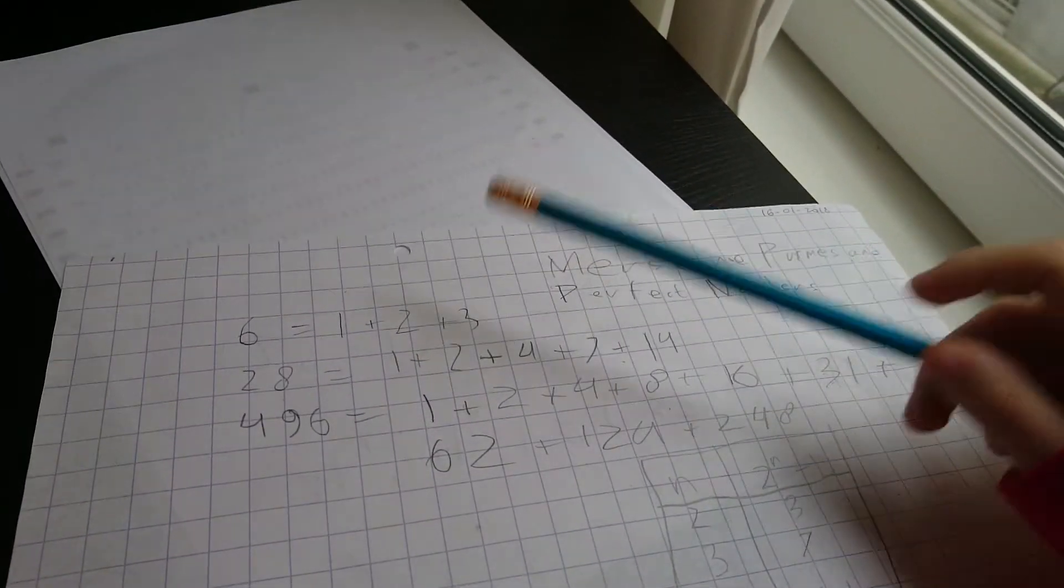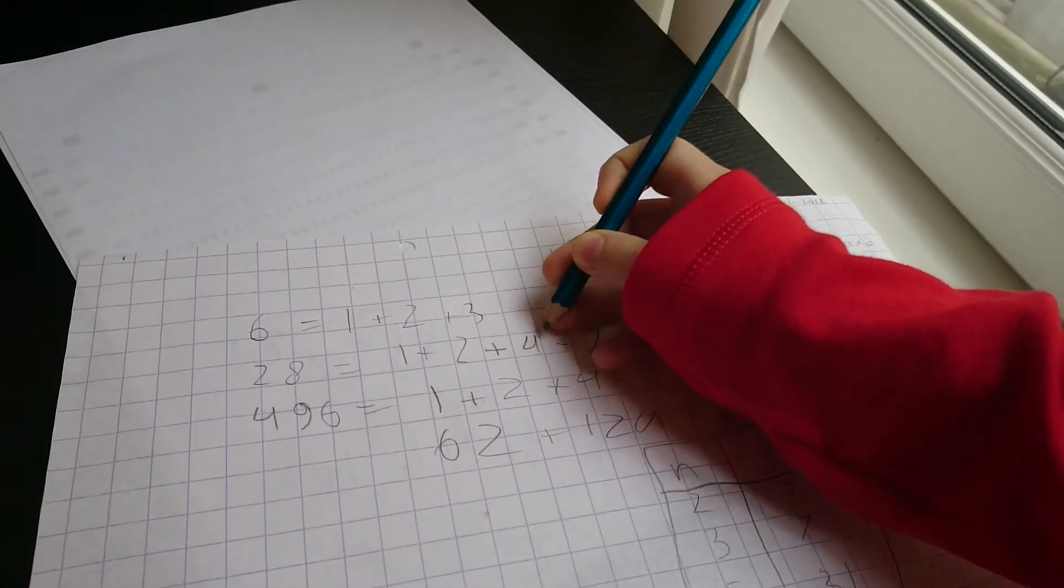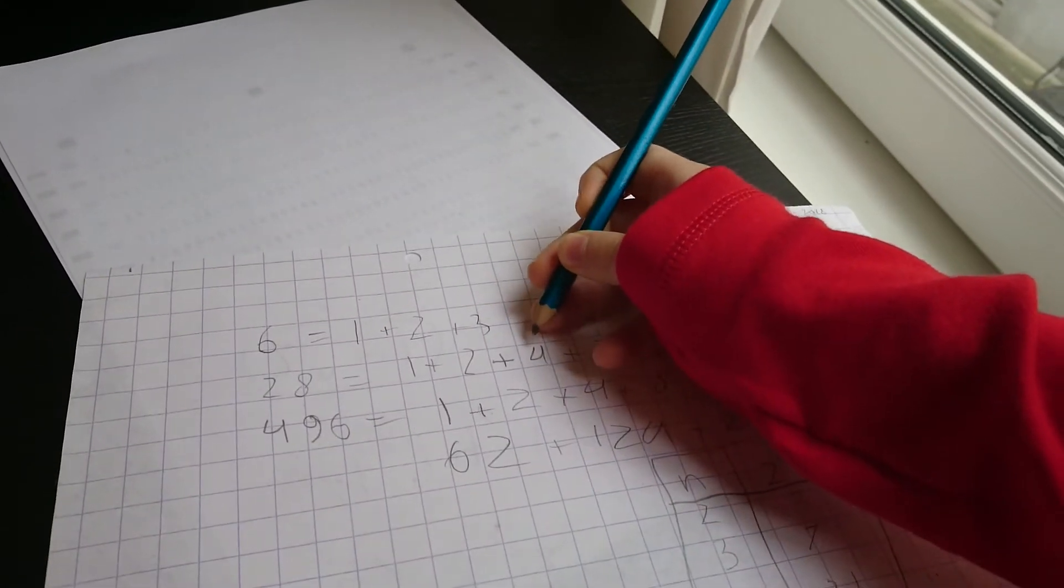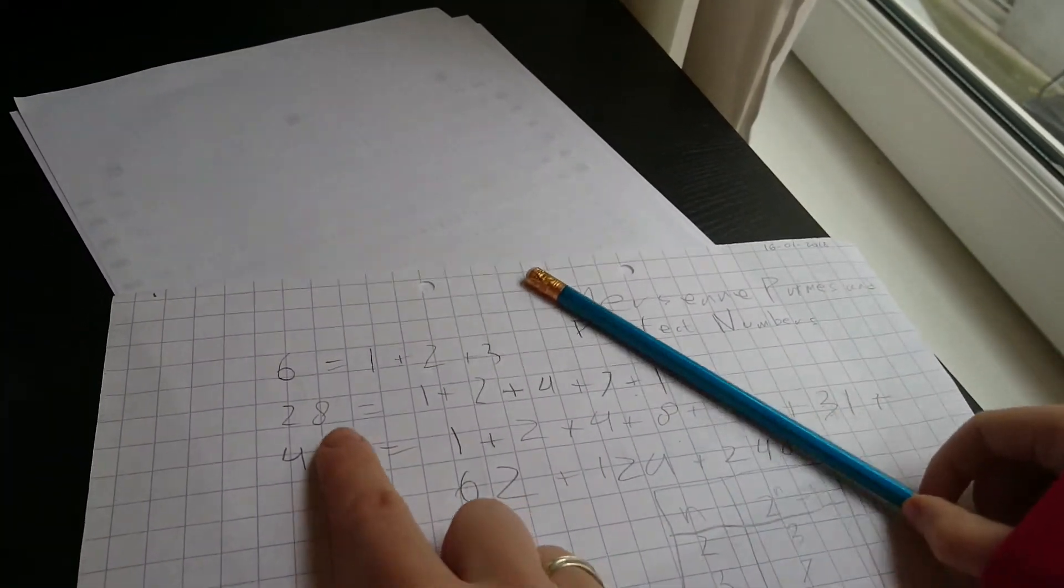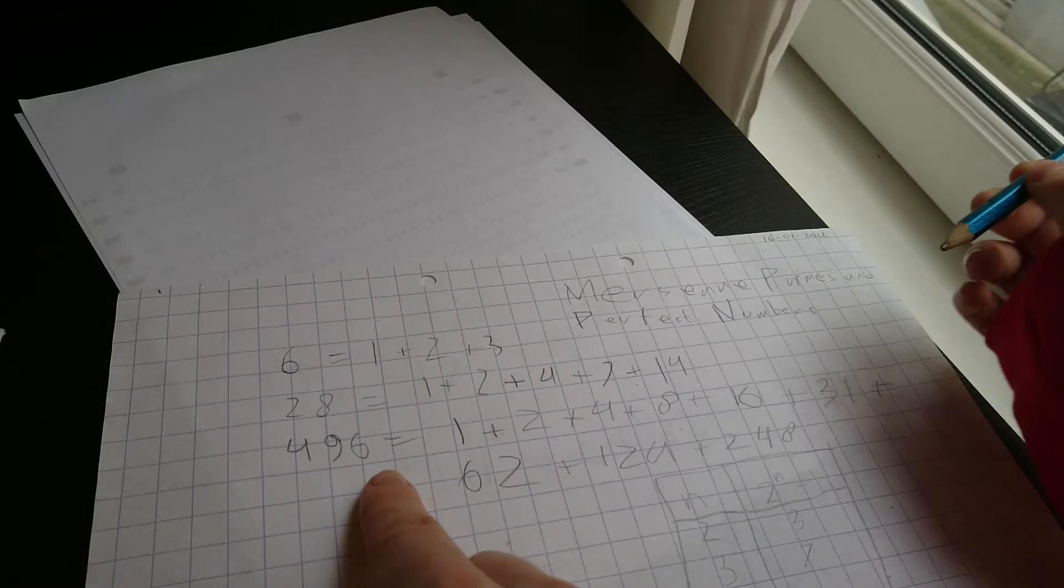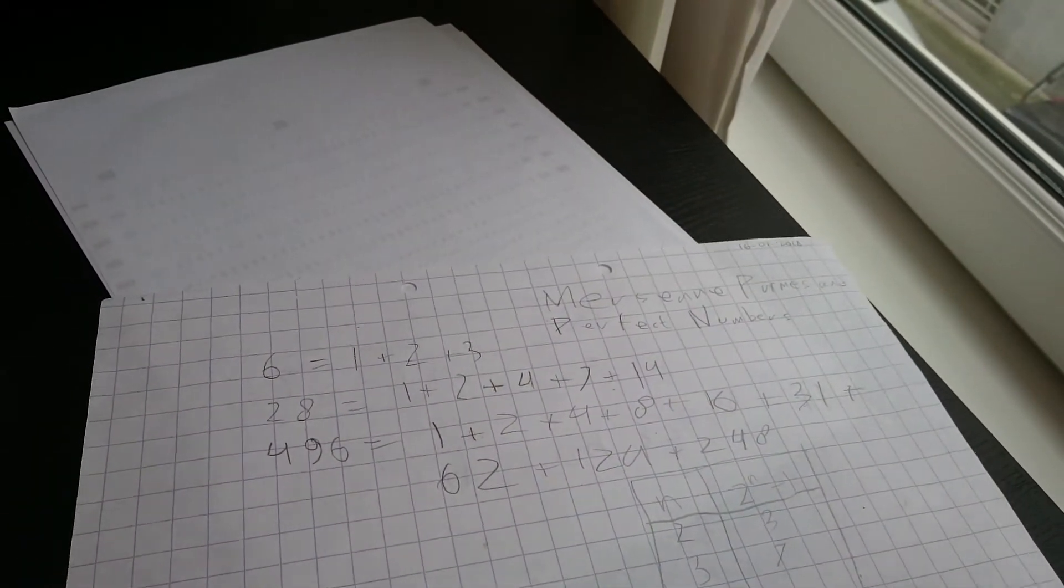Over here, we skipped the Mersenne prime that we already had. So basically, every perfect number, as you explained to me yesterday, has only 1 Mersenne prime among its factors.